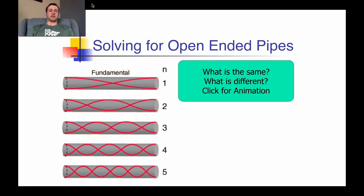A fixed end will always have a node, and an open end will always have an antinode. As waves leave pipes, they're going to leave at the crest or the trough — at their amplitude — which is going to be at an antinode. Our fundamental frequency for an open-ended pipe still sees half of a wavelength generated. Note the node in the middle of the pipe: there is a quarter wavelength on the left side and a quarter wavelength on the right side.